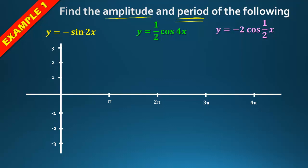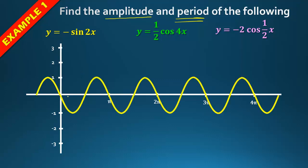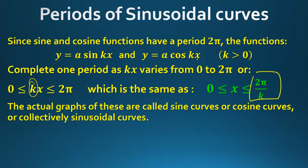Normally a sine curve takes 2π to complete one cycle. The k value — here it's 2 — means we divide 2π by k, and that tells us how long it takes to complete one period.